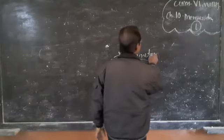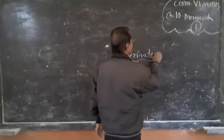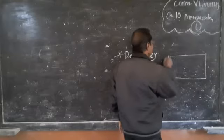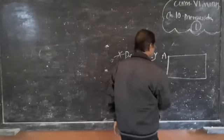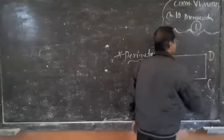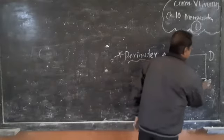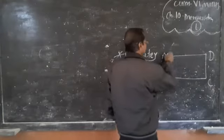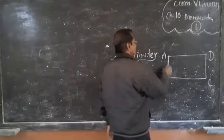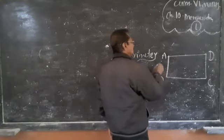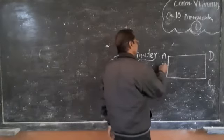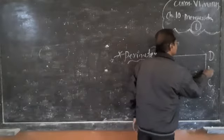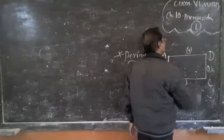So perimeter is the distance around a closed figure. Now look at here — ABCD is a closed figure. A rectangle has four sides: this is the first side, this is the second, this is the third side, and this is the fourth side.